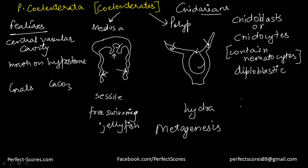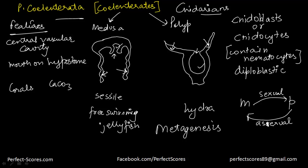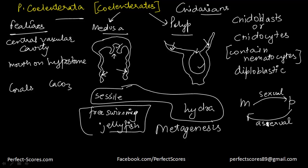One thing you need to know: from a medusa into a polyp form, the reproduction is sexual in nature. But from a polyp into a medusa, the reproduction is asexual in nature. So to quickly revise: in phylum Coelenterata, these organisms are also called cnidarians because of the presence of cnidoblasts or cnidocytes that contain stinging cells called nematocysts. They have a tissue level of organization. The digestion is both intra- and extracellular. They are diploblastic and exist in two forms — the medusa form, which is free swimming, and the polyp form.